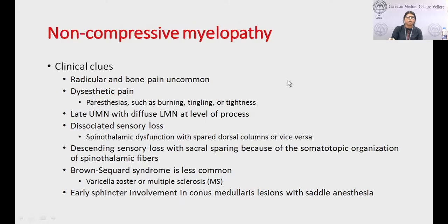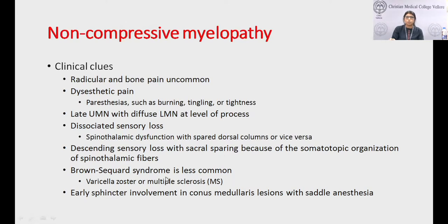In non-compressive myelopathy, symptoms include more dysesthesia — posterior column involvement — or burning and tingling rather than radicular or bone pain. There is diffuse LMN at the level, dissociated sensory loss as it is an intrinsic cord lesion, and descending sensory loss with sacral sparing. Brown-Séquard syndrome is usually not seen in non-compressive myelopathy. Early sphincter involvement in conus medullaris lesion with saddle anesthesia is characteristic.